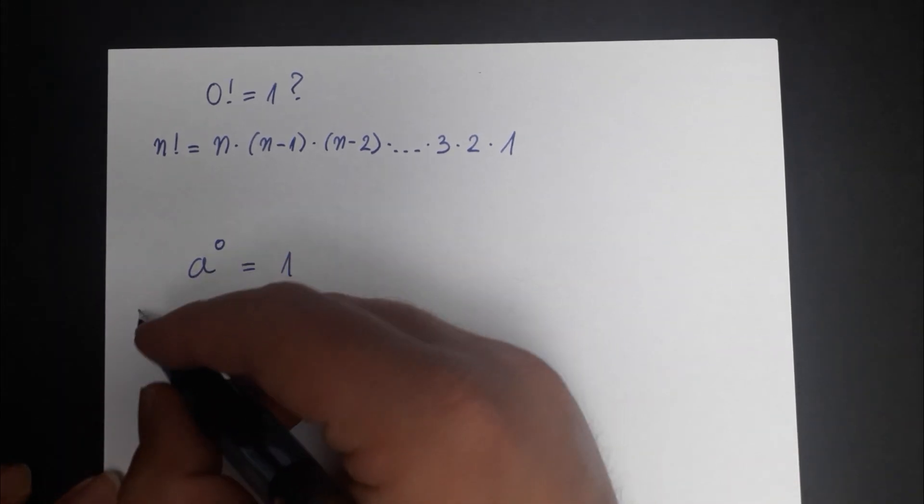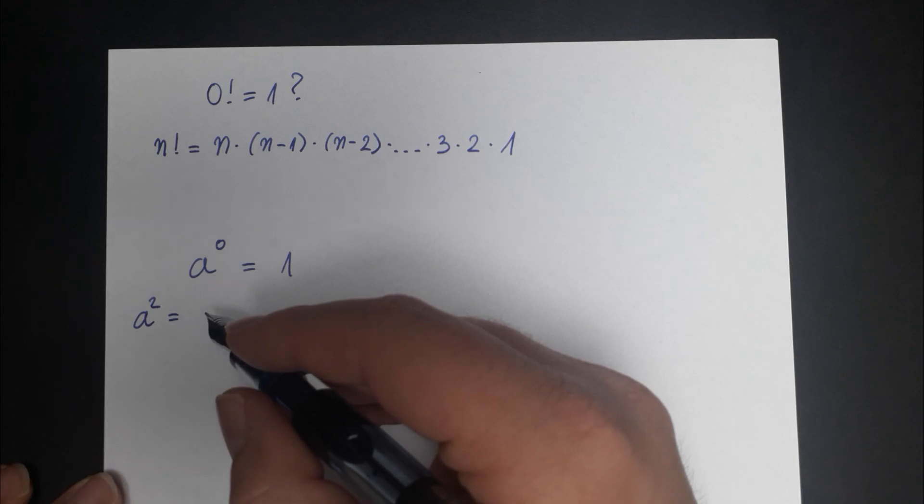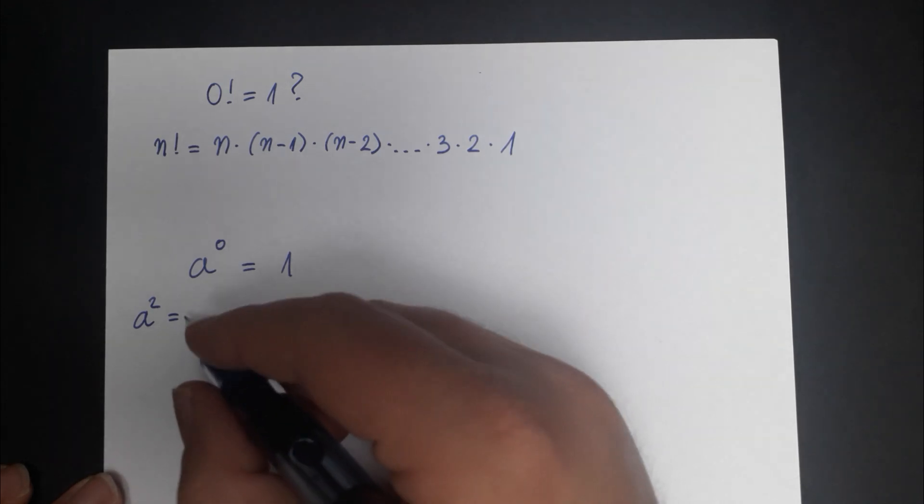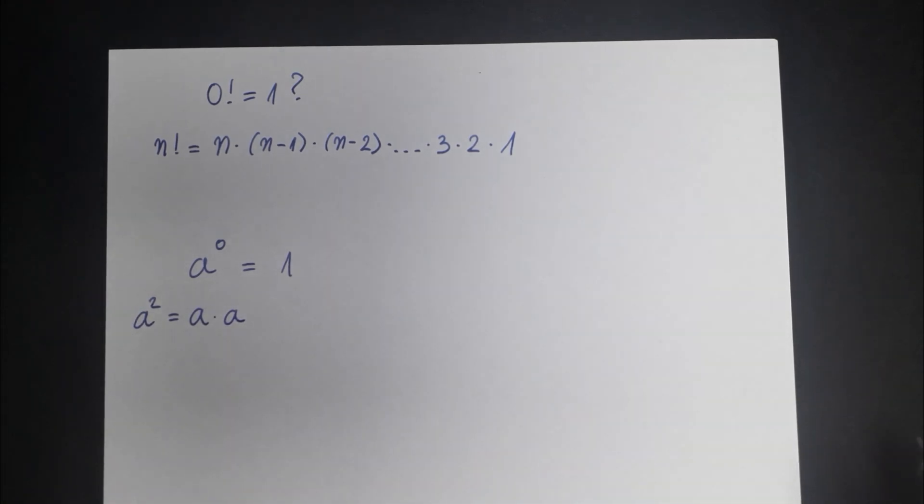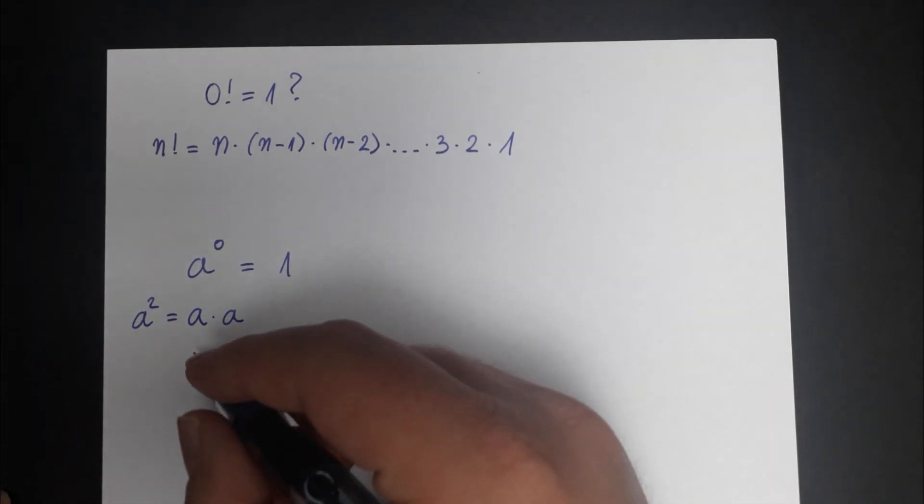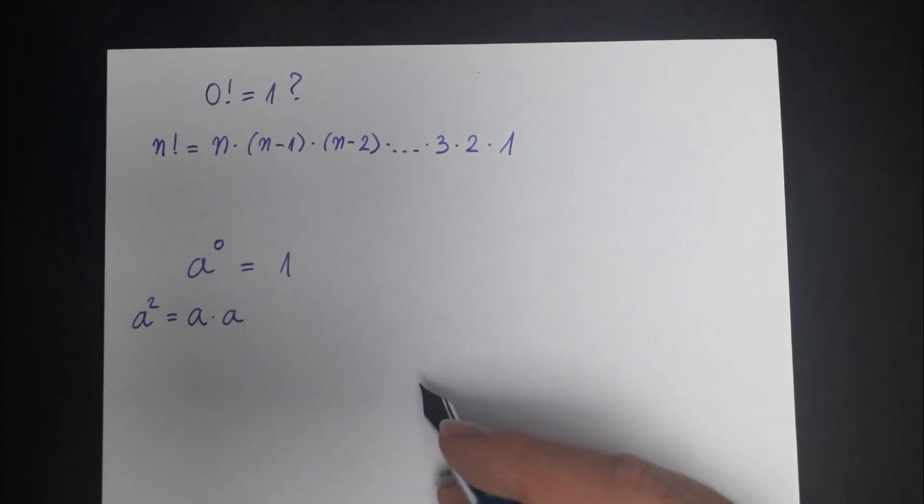When you say a squared we define powers as you multiply this number a by itself that number of times. So this is a times a. That makes sense to you but the definition breaks down when you go to cases like a to the power 0 is equal to 1. So how do you argue it?